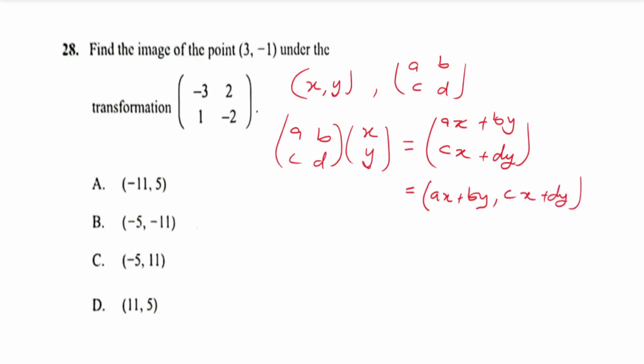So now the image of the point (3, -1) under this transformation becomes the matrix with entries negative 3, 2, 1, negative 2, multiplying (3, -1). And to write that like this: